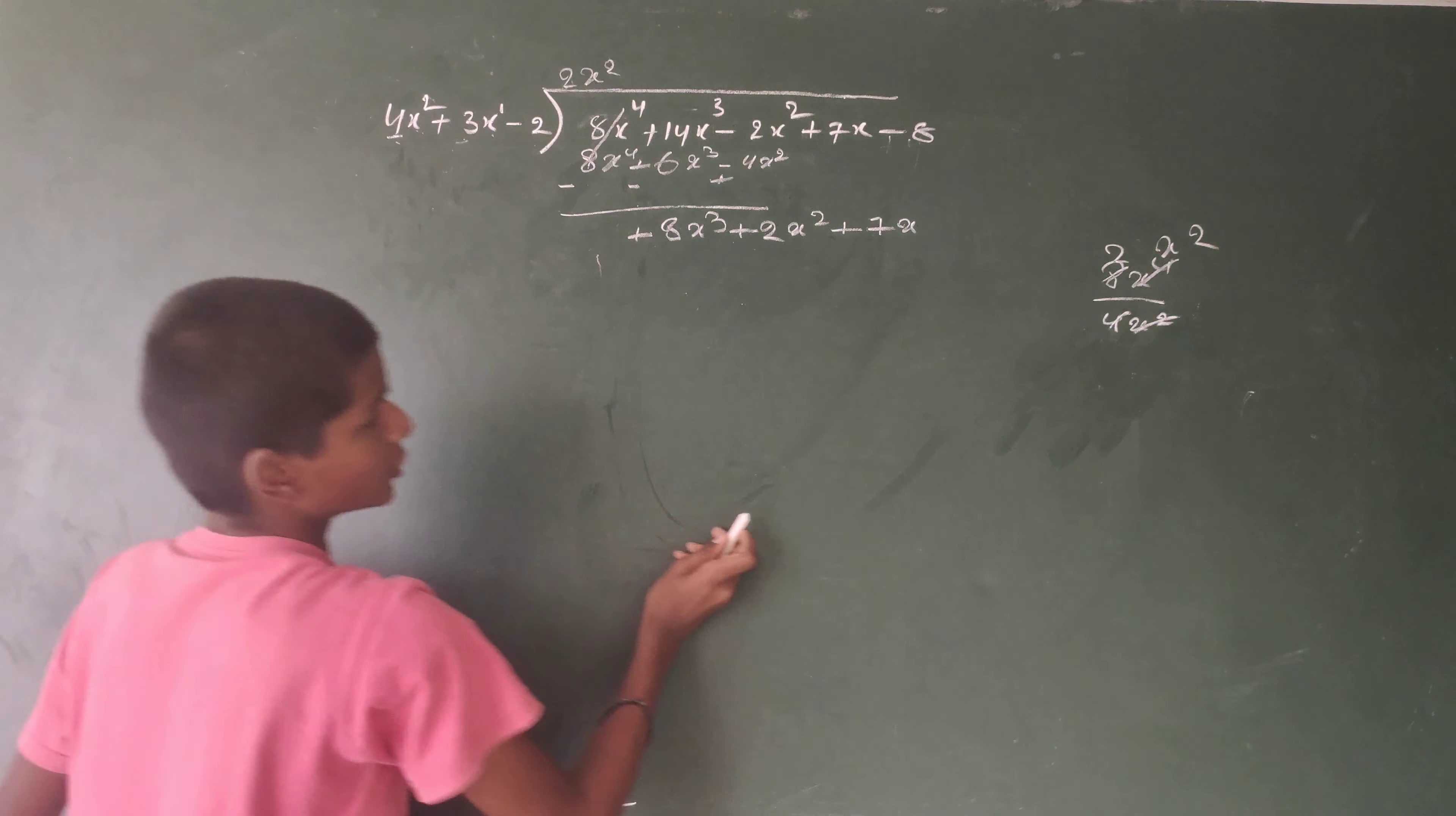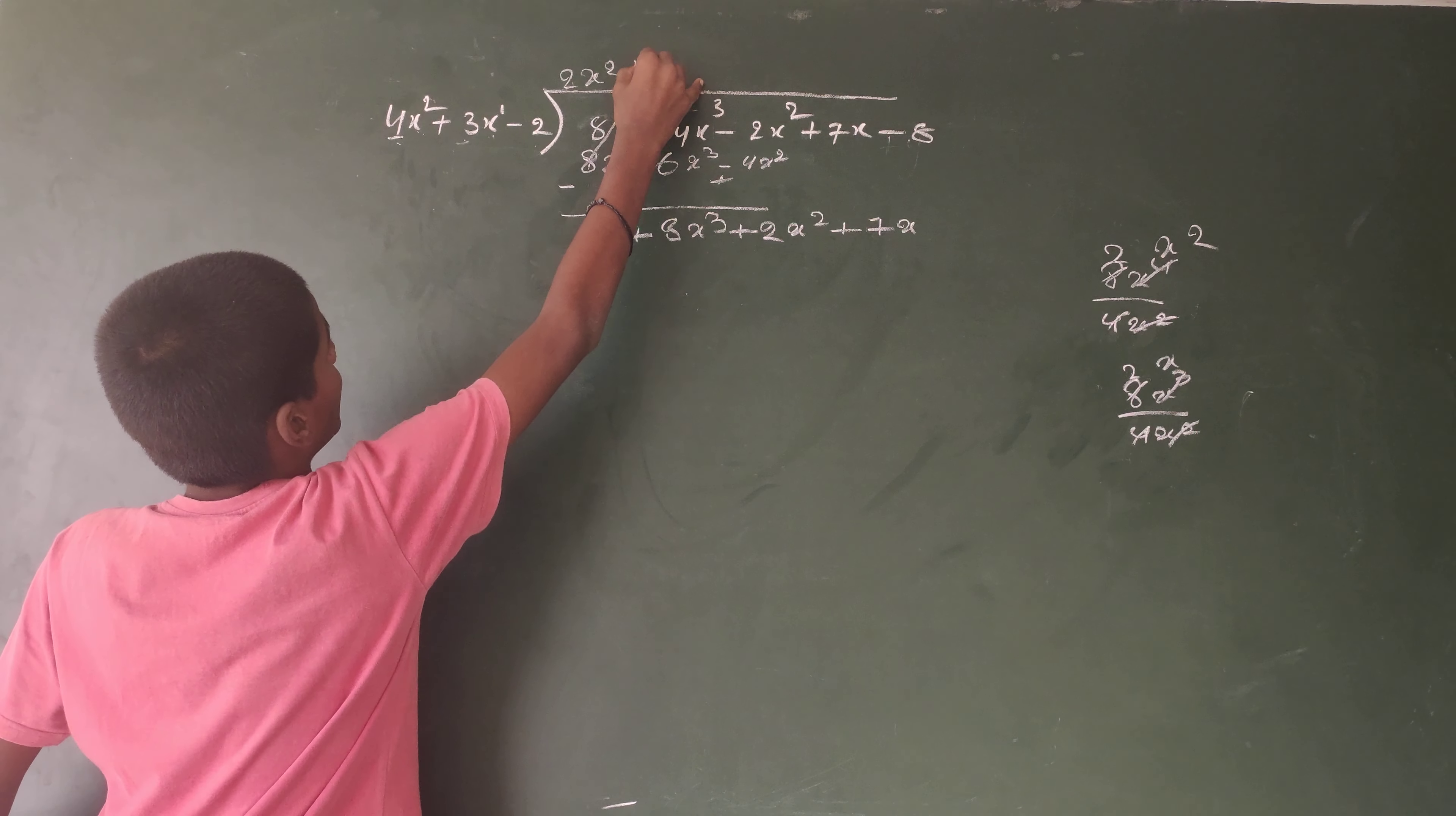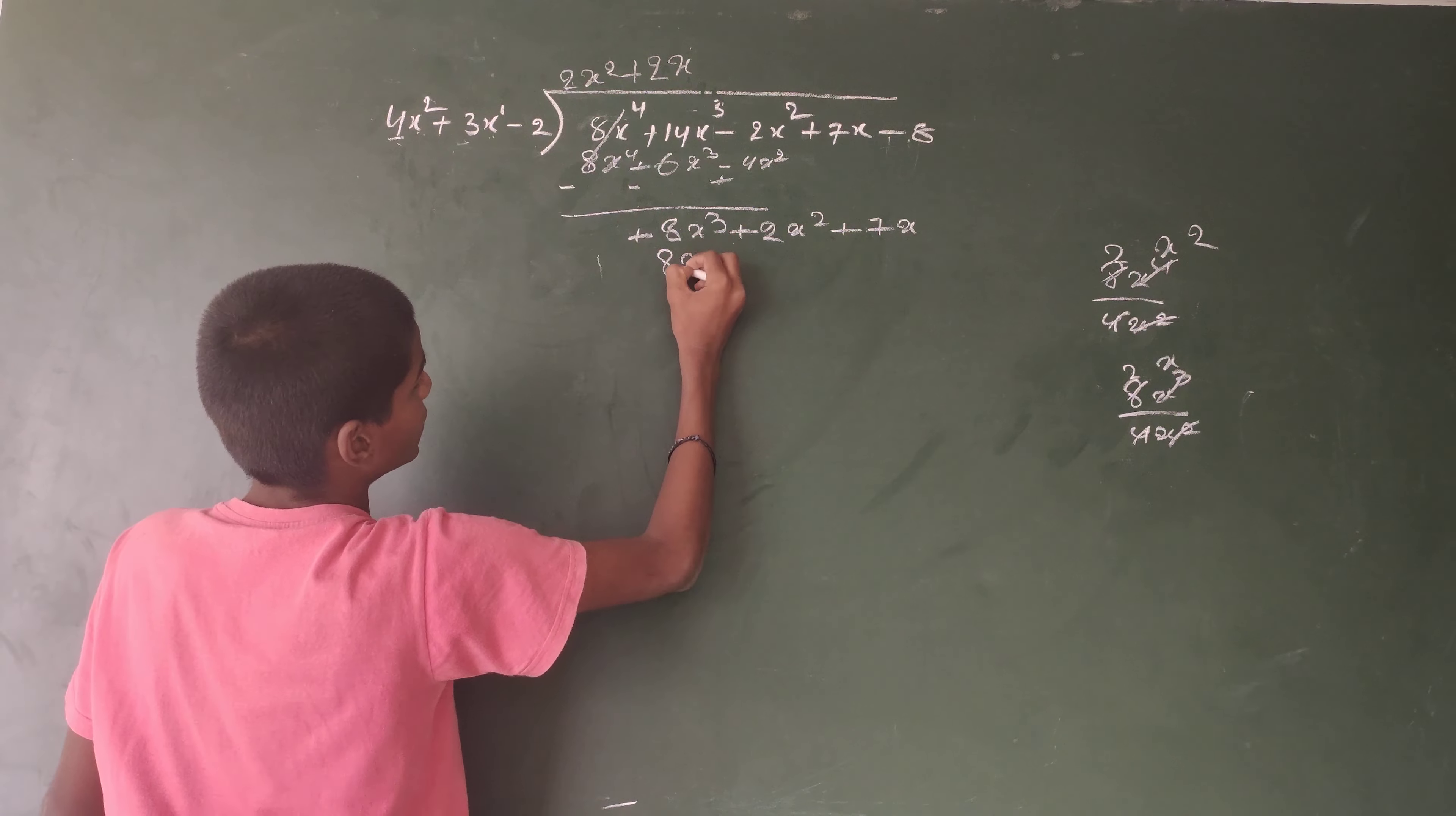8x³ by 4x², 4 and 8 is 2 times, x² and x³ is x times. Plus 2x. 4 times 2 is 8, x² times x is x³.